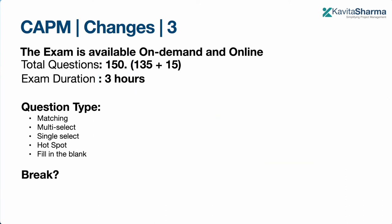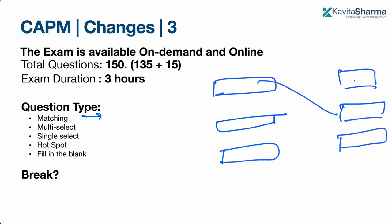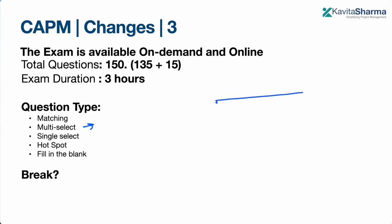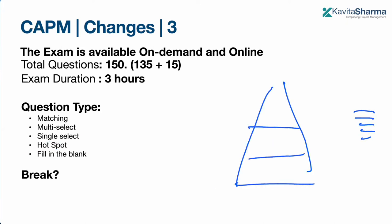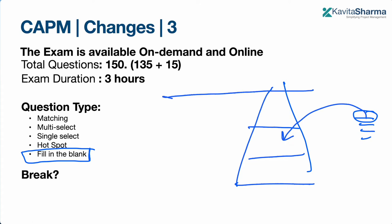Additional question types include matching, where you drag and drop definitions or roles and responsibilities. There are also multi-select questions where a scenario is given and you select two answers using checkboxes. Hot spot questions show a picture and you pick the right area as your answer. One or two questions may be fill-in-the-blank, where you type a term or number to give the answer.